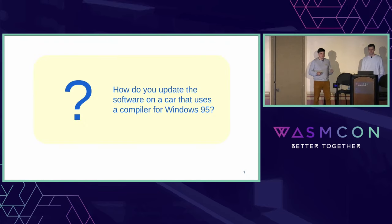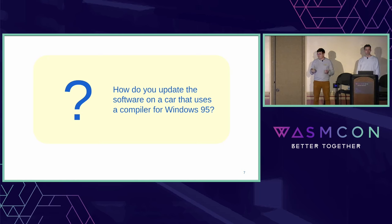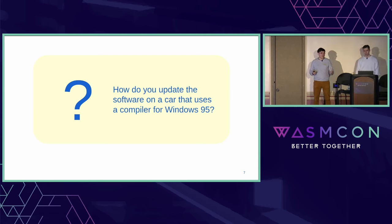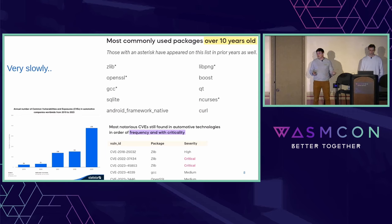How do you update software on a car that uses a compiler initially built for Windows 95? In the embedded space, these are often custom-built compilers, forks of open source compilers for specific hardware, or even closed-source compilers where you don't have the source code. Some manufacturers literally have Windows XP virtual machines running simply to recompile code for old cars. So how do you update this software? Very, very slowly.